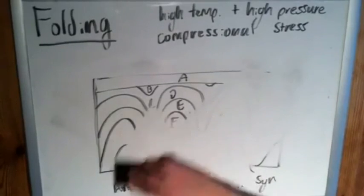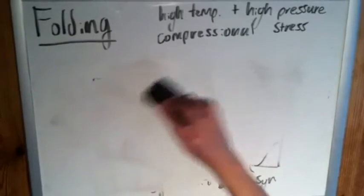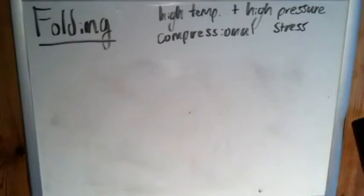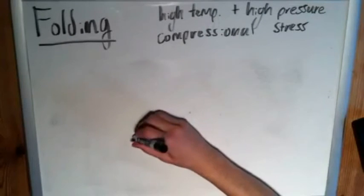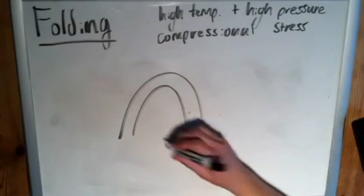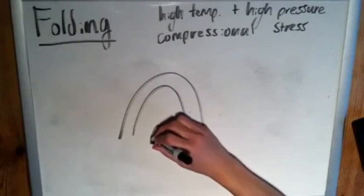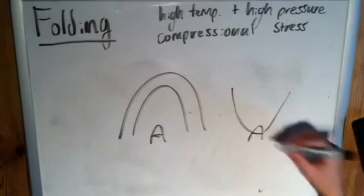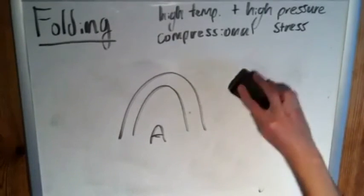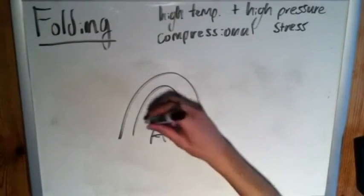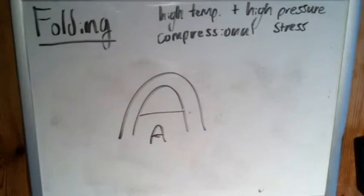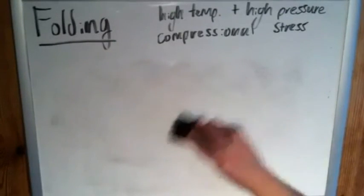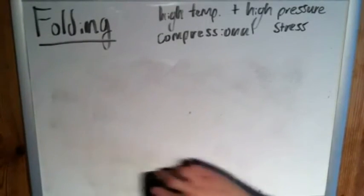As far as remembering which is which between antiform and sinform, I don't have any real sophisticated method. My sort of go-to is just this is what an antiform looks like. If you draw an A in there, it sort of fits. Meanwhile, with a sinform, it doesn't fit. So A for antiform. You could sort of draw it as an A if you drew a little line across there. Not very clever, very unsophisticated, but it gets the job done for me if ever I'm scratching my head.